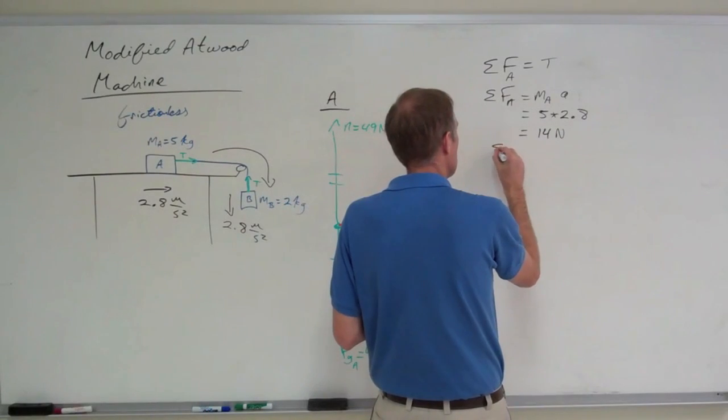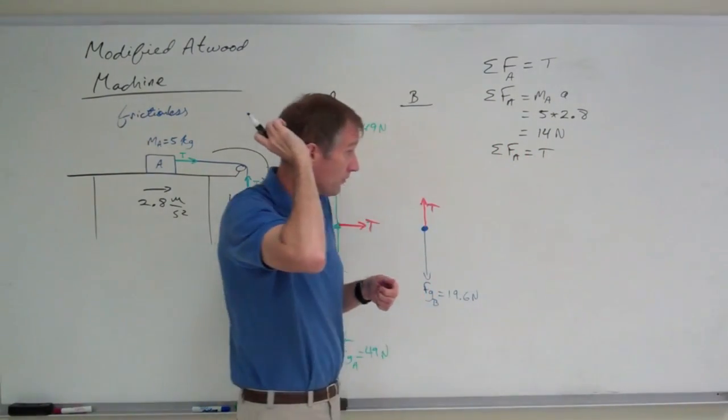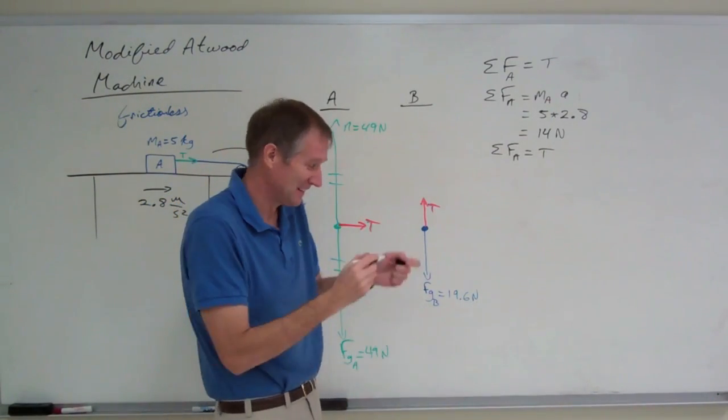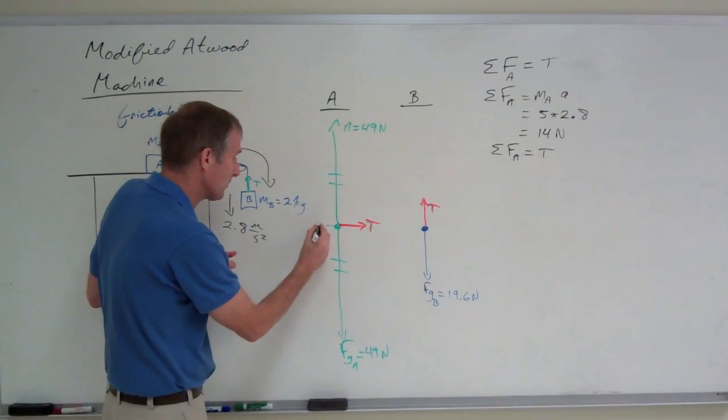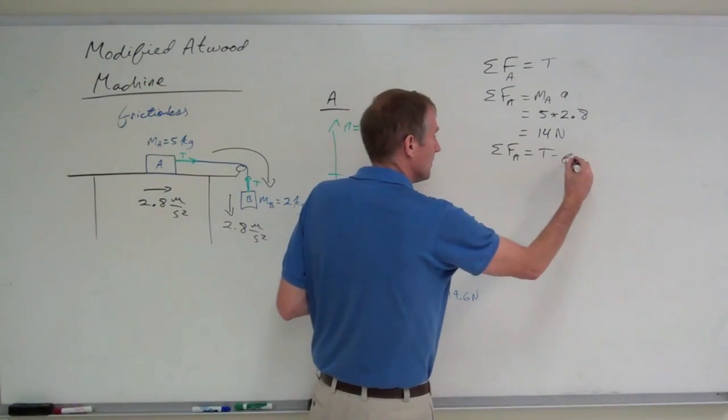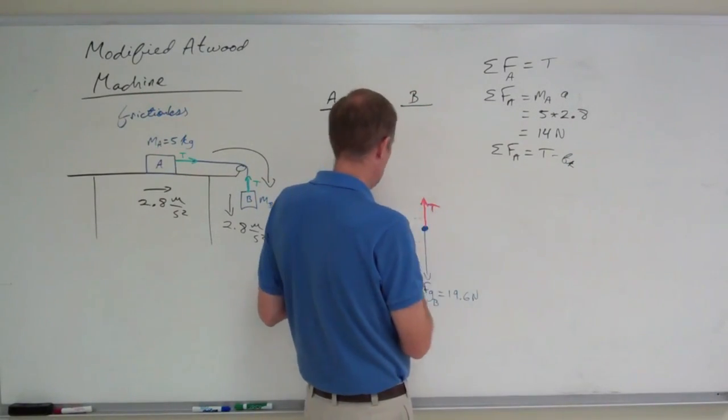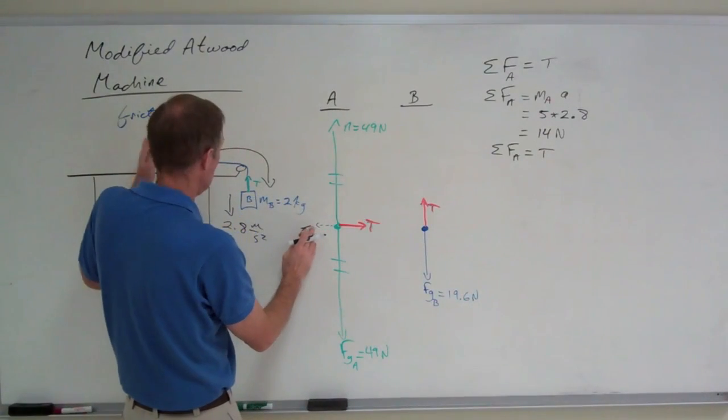And I just said that the net force acting on block A is due solely to the tension. Again, if there were friction, I would have subtracted out the friction, and then that net force would be tension minus friction. But there isn't any, because I said it's frictionless.